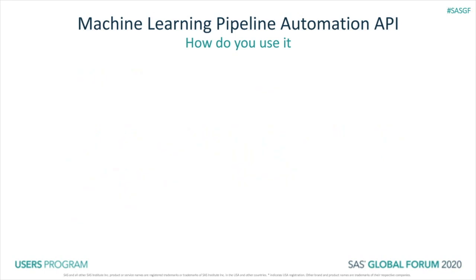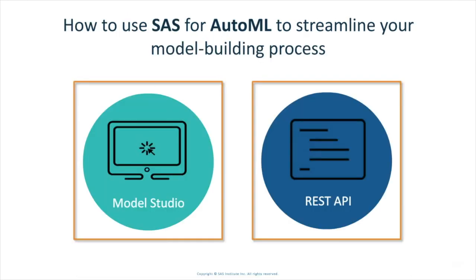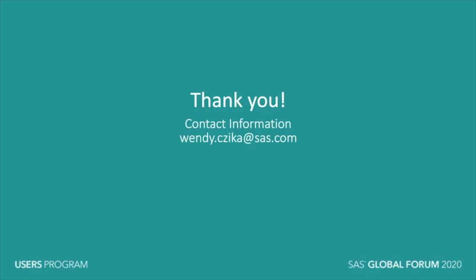Here's just a snippet of the Python code to give you an idea of how these requests are made. So just to summarize, today I covered how AutoML in SAS can be used to streamline your model building process using either the Model Studio interface or REST API for automation, both available in SAS Visual Data Mining and Machine Learning. Please find our paper online in the conference proceedings once that is available for more detail, including links to code, or feel free to email me with any questions. Thank you.